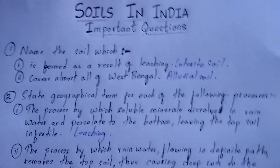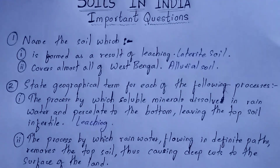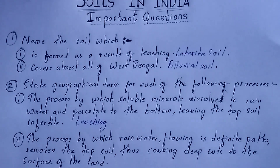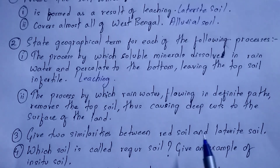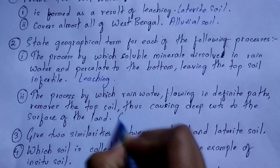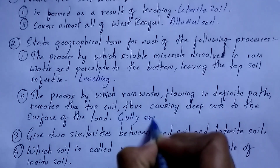The next process to name: the process by which rain water flowing in a definite path removes the top soil, causing deep cuts to the surface of the land. This process of erosion where there are deep cuts is known as gully erosion.